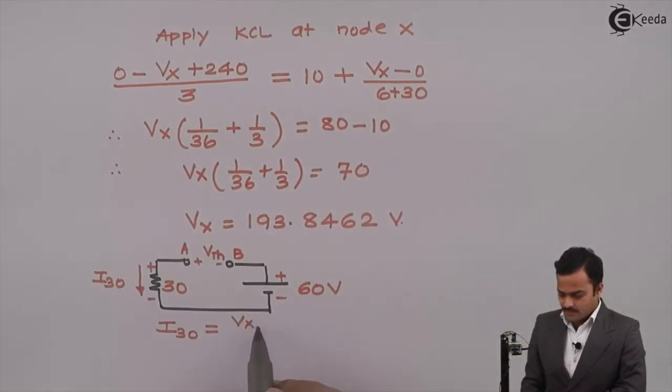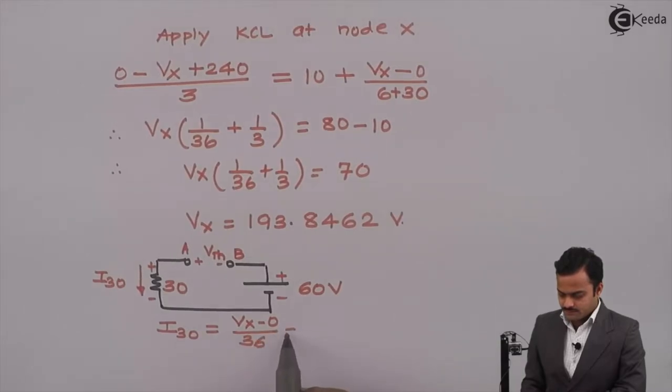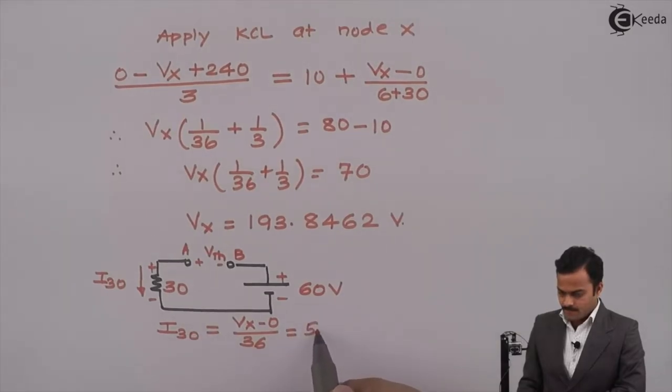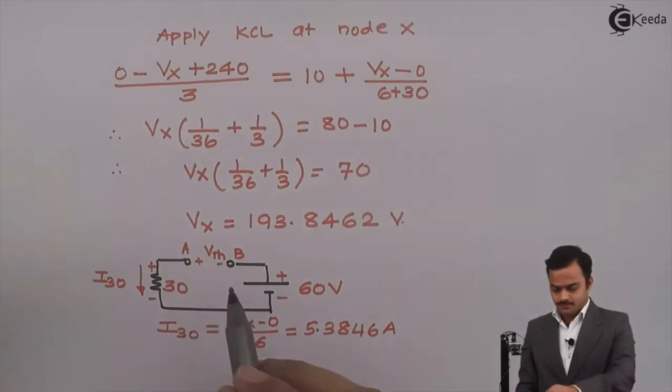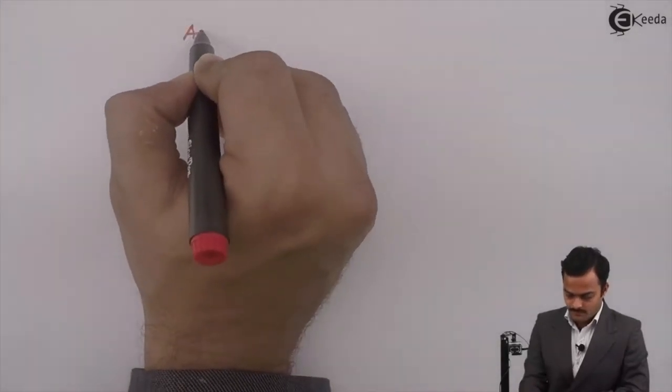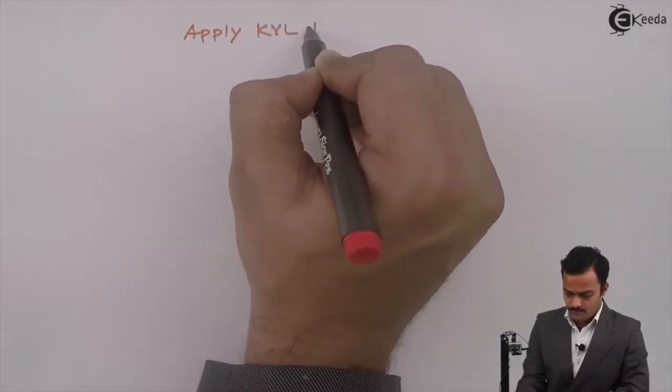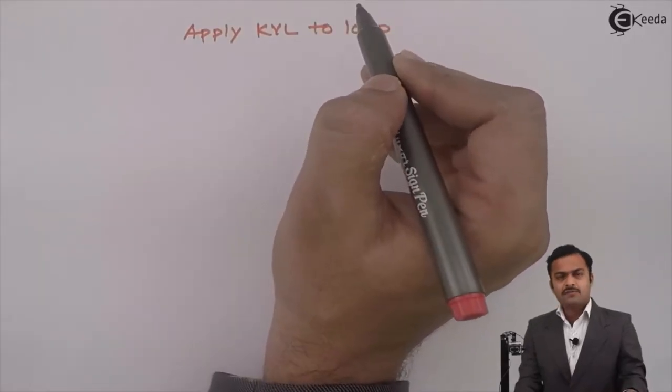I30 equals this current whose equation I have written like this Vx minus 0 divided by 36. If I substitute the value of Vx, I will get answer 5.3846 ampere. Now, our job is simple. Let us apply KVL to this loop.